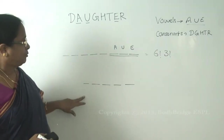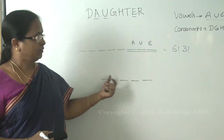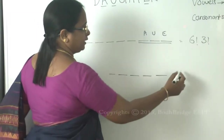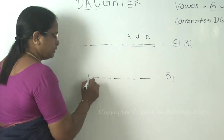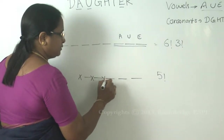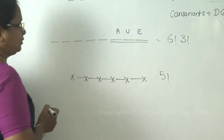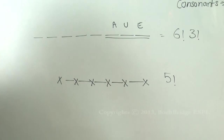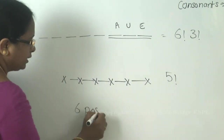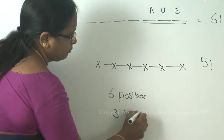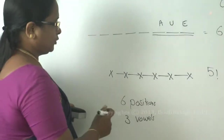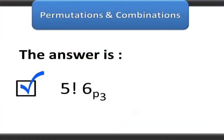Since the vowels have to be separated, the consonants have no condition. So first arrange the five consonants in five factorial ways. Then for the vowels, the positions available are between the consonants and at the extreme ends. That gives one, two, three, four, five, six — six positions available for three vowels. So the number of ways to place the vowels is P(6,3), giving five factorial into P(6,3).